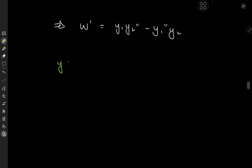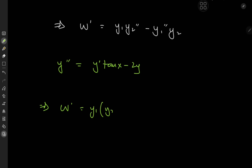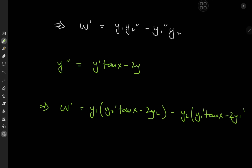Now, we have the second derivatives of both y1 and y2, and we know both satisfy the given differential equation. Recall that equation: y double prime equals y prime times tangent x minus two y. We can subscript it with 1 and 2 and plug into the Wronskian equation. So W prime equals y1 times the quantity y2 prime times tangent x minus two y2, minus y2 times the quantity y1 prime times tangent x minus two y1.